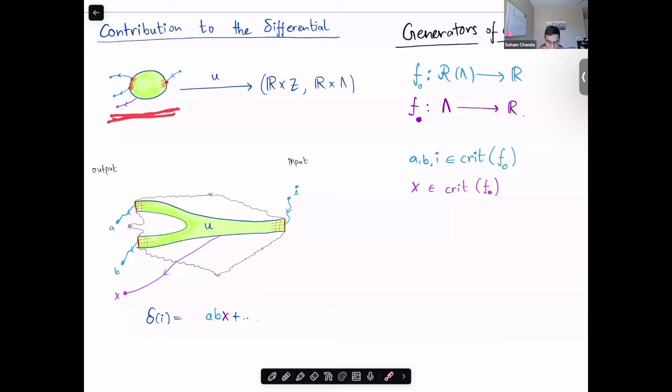You would count maps from treed holomorphic disks, sorry, maps from treed disks, which are holomorphic in the disk part, to the target R×Z with boundary on R×λ. Here, on the edges, you have one input edge and multiple output edges. So, on the one input edge, you will have to start from i, because we are computing del of i. You flow along the Morse flow of F_0. Then, you have a disk, where there is an asymptotic end near where the edge connects with the boundary of the disk, and you have a matching condition here that the Reeb chord u is asymptotic to, is the same as the one where you end in your Morse trajectory. Similar asymptotic matching conditions in the outputs, and here the matching condition is actually on lambda, because we are flowing on lambda. For this particular holomorphic treed disk, the contribution would be the word ABX. Here, I am just reading it from top to bottom. So, the differential is given by counts of all such rigid treed holomorphic disks.